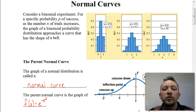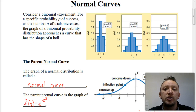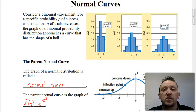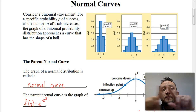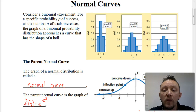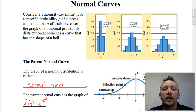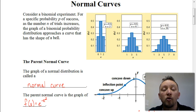In this unit, we're going to be looking at larger distributions of data. As that distribution of data gets closer and closer to infinity, what happens to the shape of that graph? And that's going to be the shape of a normal curve.